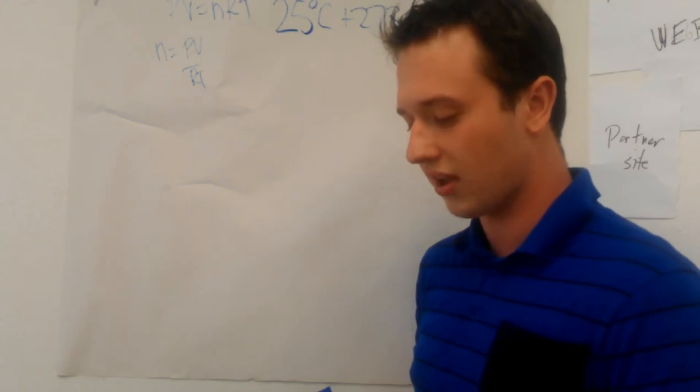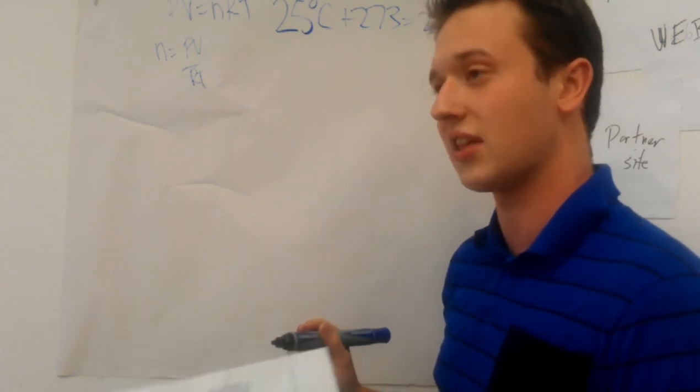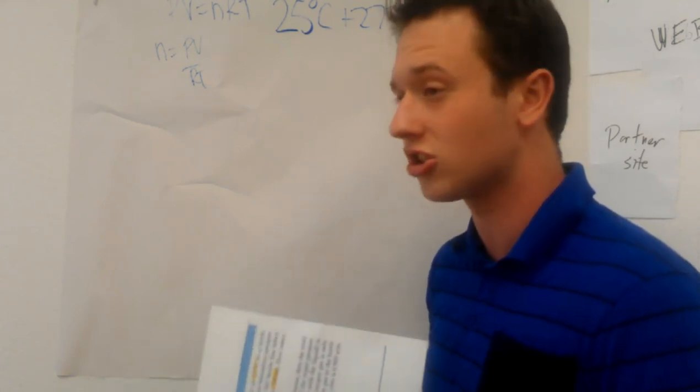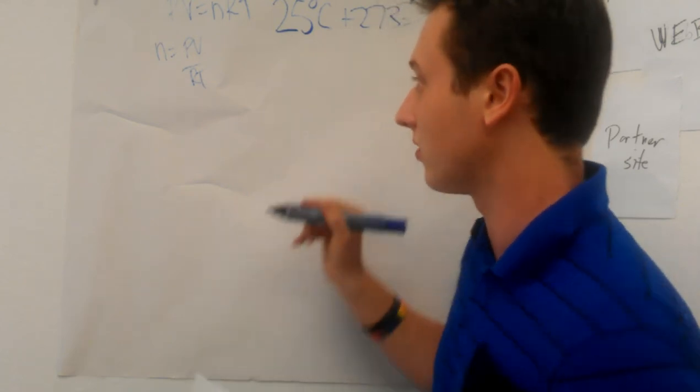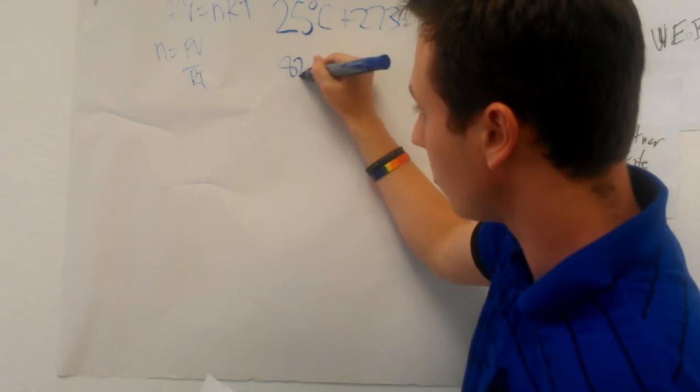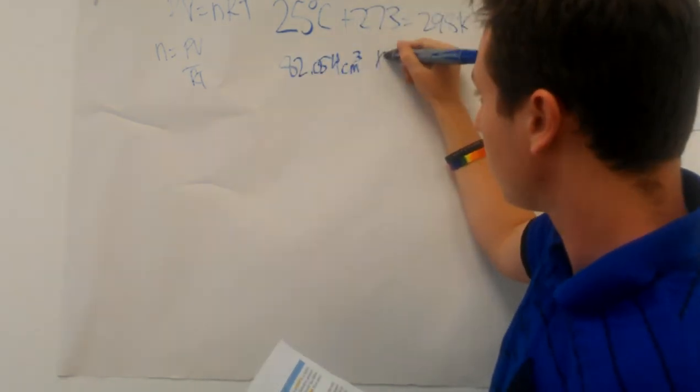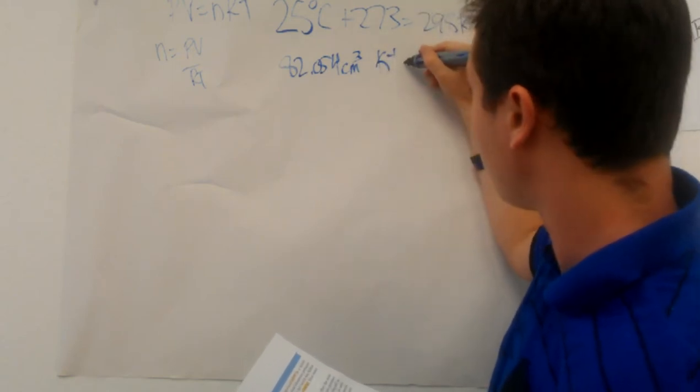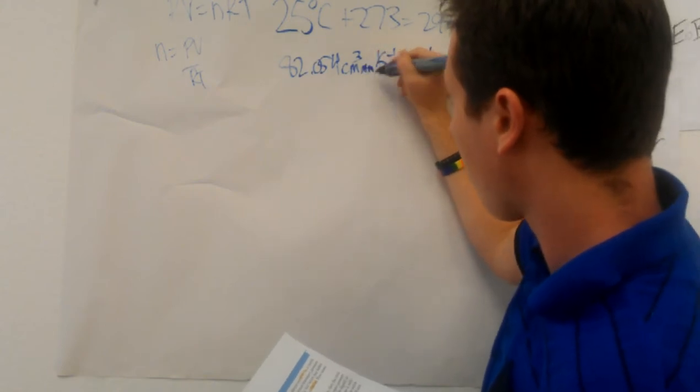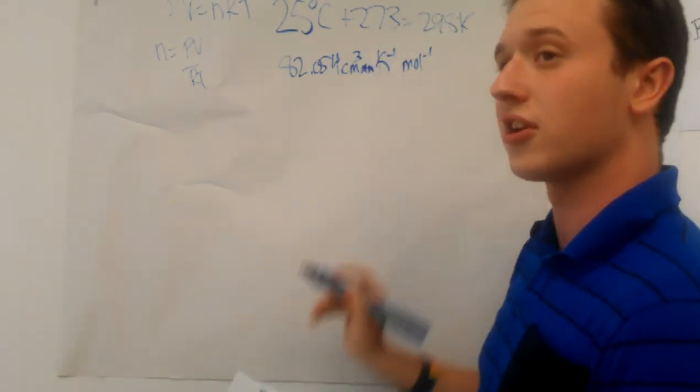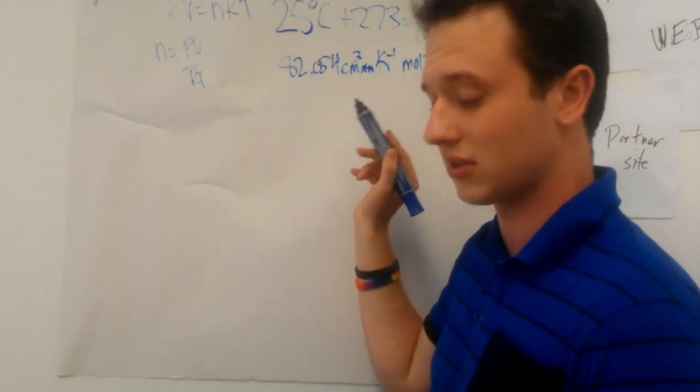Next let's take a look at the R constant. The R constant is a constant that will be given to you by your professor, teacher, textbook, whatever. You're not going to know it, but it was experimentally tested and it should be given to you. The one we're going to be using today is 82.054 centimeters cubed, K to the negative first power, mole to the negative first power, atmospheres. Notice these units. They're going to be really important. The reason we're going to be converting things is so that we can cancel with these units later.